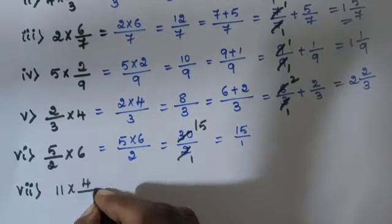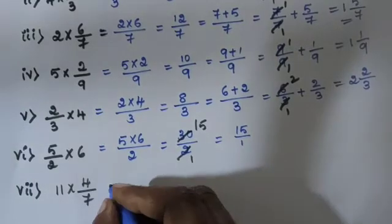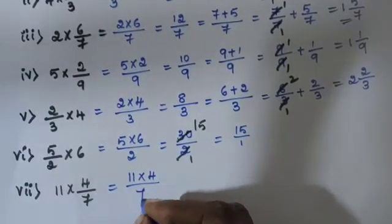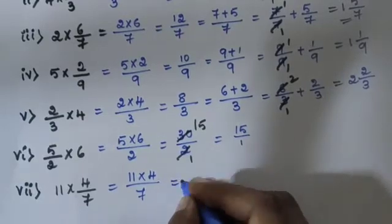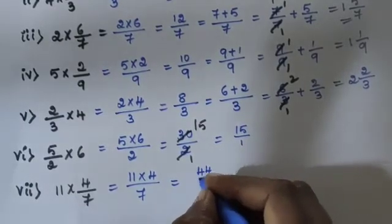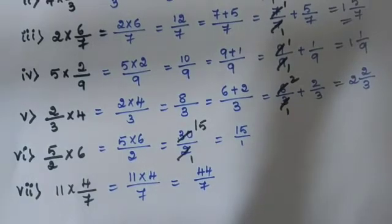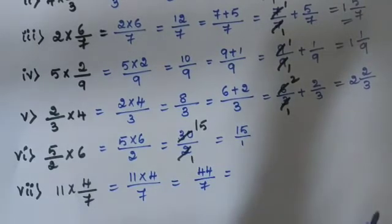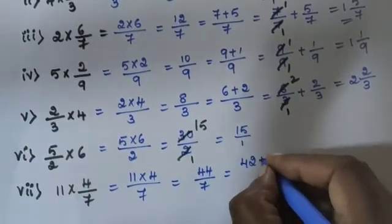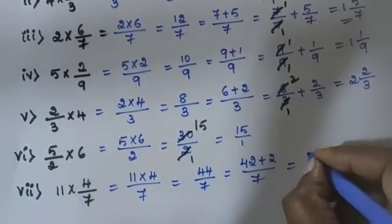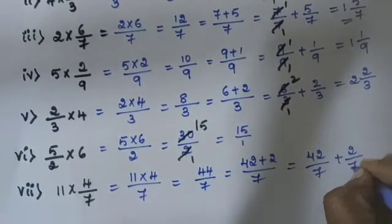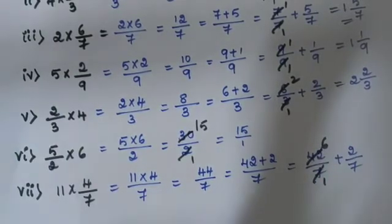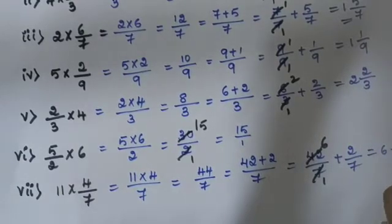Sub-question 7: 11 into 4 by 7. 11 is the whole number, 4 is the numerator, 7 is the denominator. 11 into 4 is 44, divided by 7. 44 is an improper fraction. Split: 42 plus 2 divided by 7 equals 42 by 7 plus 2 by 7. 7 sixes are 42. Answer is 6 and 2 by 7.